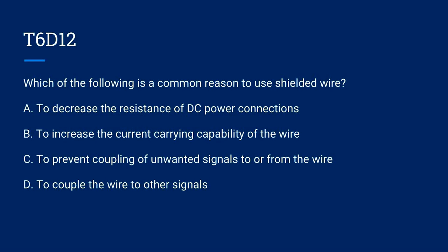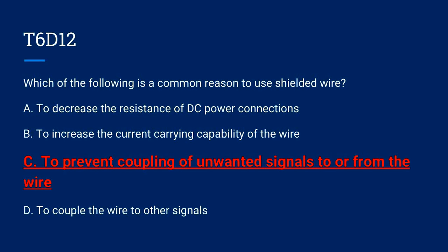T6D12. Which of the following is a common reason to use shielded wire? A. To decrease the resistance of DC power connections. B. To increase the current carrying capability of the wire. C. To prevent coupling of unwanted signals to or from the wire. Or D. To couple the wire to other signals. The correct answer is C. To prevent coupling of unwanted signals to or from the wire.